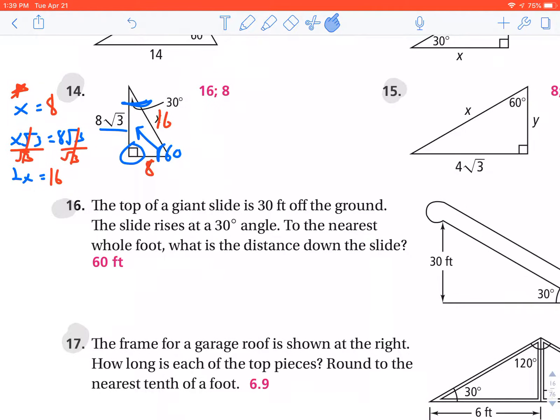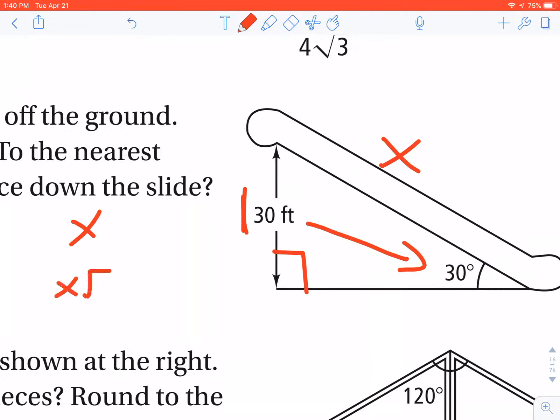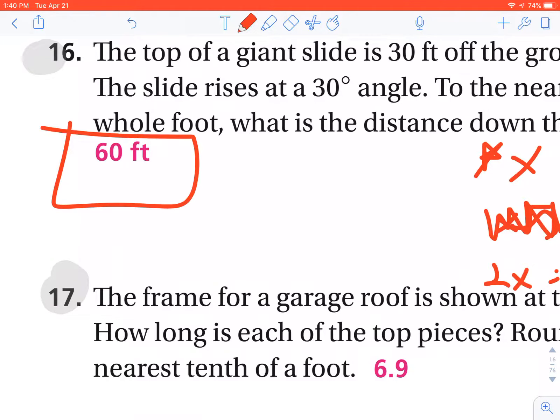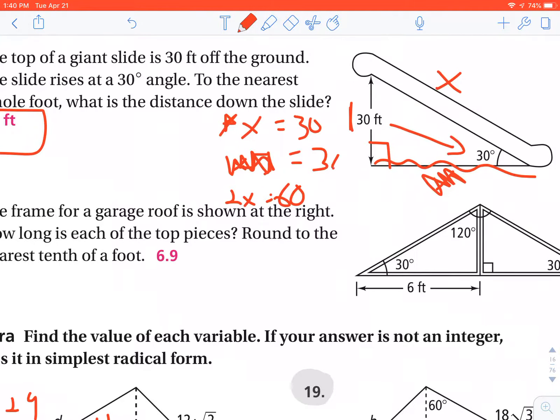Number 16, they give you the top of a giant slide. It's 30 feet off the ground. The slide rises at a 30-degree angle. To the nearest whole foot, what is the distance down the slide? So let's just forget entirely that we're talking about a slide. They're asking you for that length. In your right triangle, this would be your short leg because it is opposite of 30 degrees. So if I make my table, I don't need to know anything about the long leg. That is not relevant to me. I'm given the short leg, which is 30. I want to find the hypotenuse. Well, you take whatever your short leg is, and you multiply it by 2 to get your hypotenuse or your length of the slide. If you were ever so inclined to know the length down here, it would be 30 radical 3. But they didn't ask for that. They gave you the short leg. They're basically asking you for the hypotenuse.